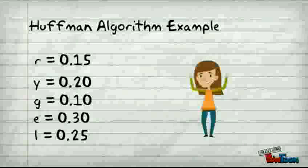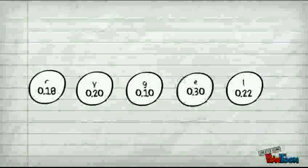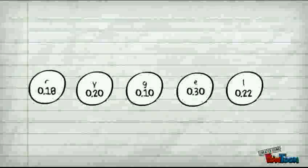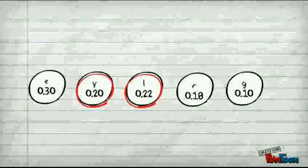Arrange these probabilities in descending order. The last two symbols R and G are combined, that is addition is taken.